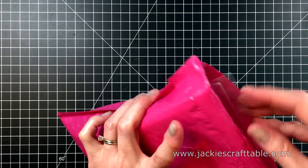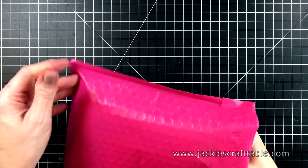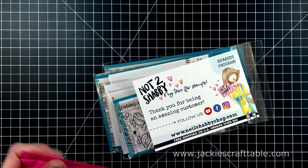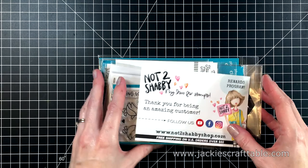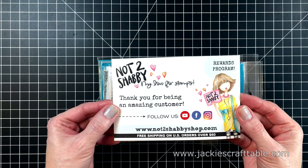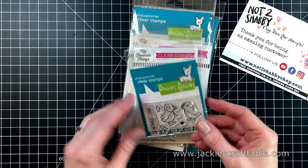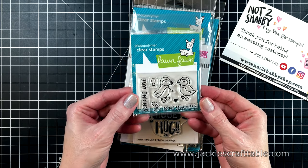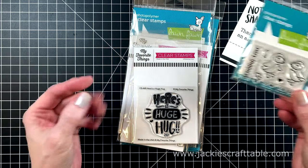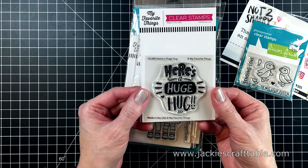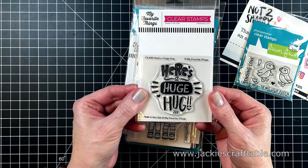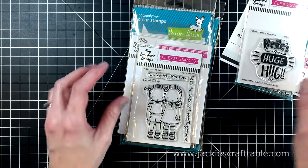This cute pink envelope contains a few products that I picked up at the Not Too Shabby shop. It also contains my design team stamp for the month, but I pulled that out because I'm going to be using that in my next video. I'm going to start out by showing you this cute Stud Puffin stamp set. I got this for free with a purchase of $60. I really love this stamp from My Favorite Things. It says here's a huge hug.